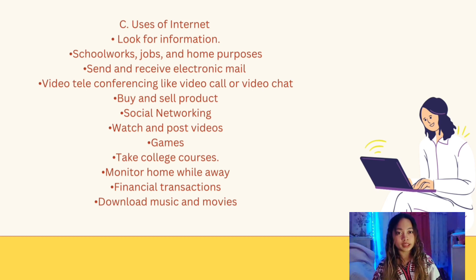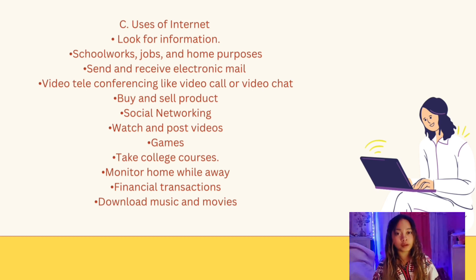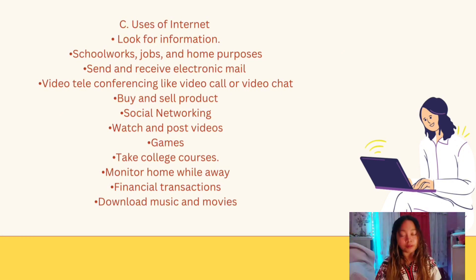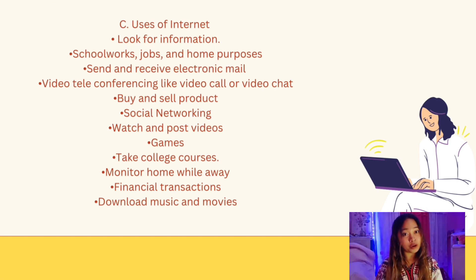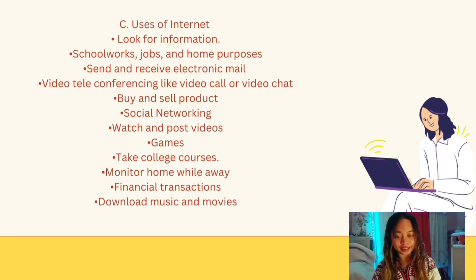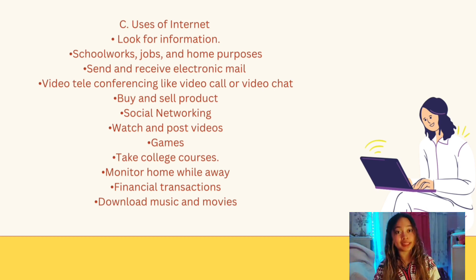The second use is for school work, jobs, and home purposes. Because of the internet, doing school work, applying for jobs, or working from home is easier and more convenient. The third use is to send and receive electronic mail. Email allows people to exchange messages very quickly and is the electronic equivalent of a letter, but more flexible. The fourth use is video teleconferencing — video calls or video chats — a video communication that lets two or more parties meet face to face through the internet. The fifth use is to buy and sell products — online shopping and selling.